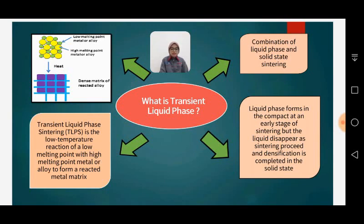So basically, the sintering process can be divided into two which is solid state sintering and liquid state sintering. In addition to solid state and liquid phase sintering, there is transient liquid phase sintering and viscous flow sintering. In our case, we just focus on transient liquid phase sintering, which is the combination of liquid phase and solid state sintering. In the sintering technique, liquid phase forms in the compact at the early stage of sintering but the liquid disappears as sintering proceeds and densification is completed in the solid state.